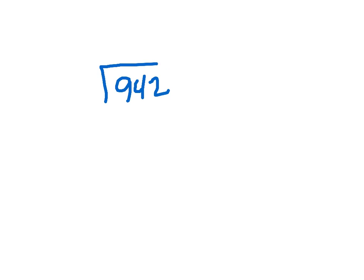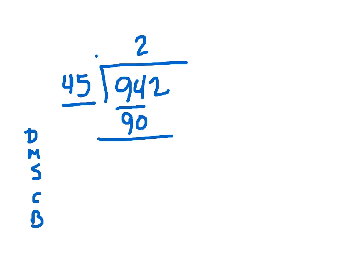942 divided by 45. How many times does 45 go into 94? Twice. Because I know 2 times 45 is going to give me 90. Alright, so I'm going to subtract. That's going to give me 4. So 4 is less than the 45. We have something to bring down the 2.